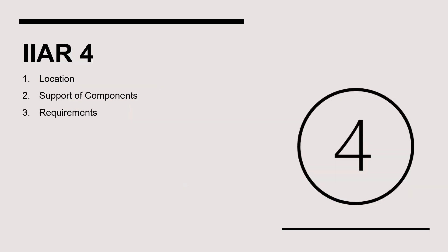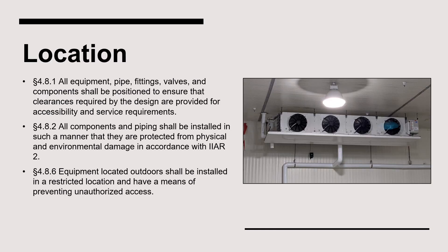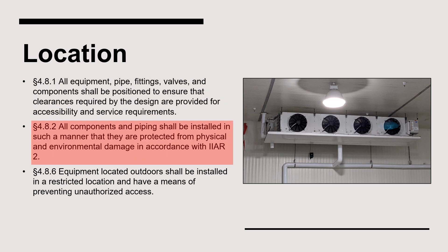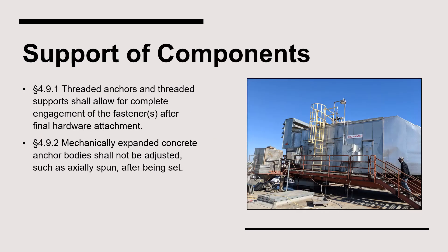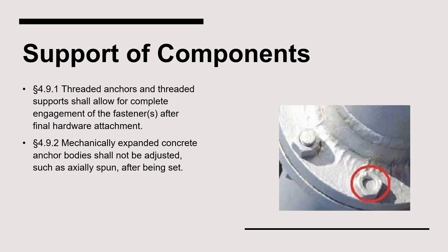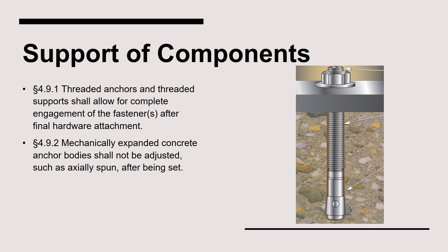Moving on, we'll dig into the air cooling evaporator installation requirements in IIAR Standard 4. Section 4.8 requires that all equipment be positioned to ensure clearance is provided for accessibility and service requirements. Furthermore, the evaporator must be protected from both physical and environmental damage. Air cooling evaporators are not installed outdoors, so Section 4.8.6 would not be applicable. As it relates to supporting and anchoring an air cooling evaporator, any threaded fasteners must be completely engaged. Additionally, expanded concrete anchors must not be spun after they have been set in concrete, which would apply only to ground-mounted air cooling evaporators.